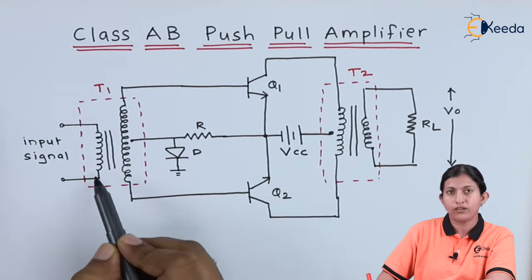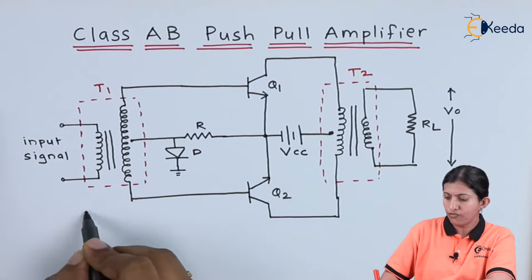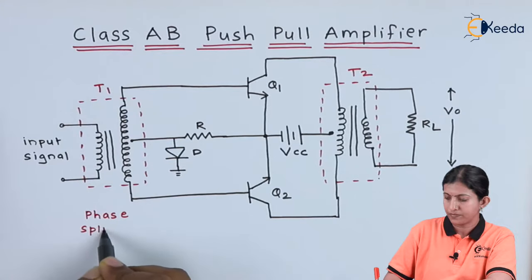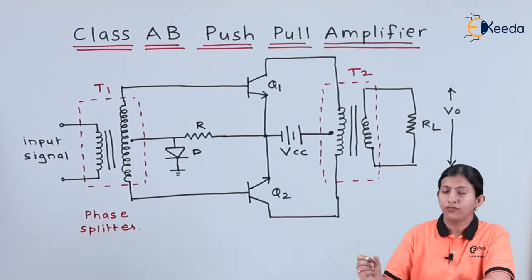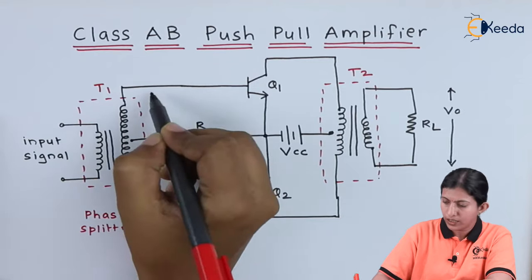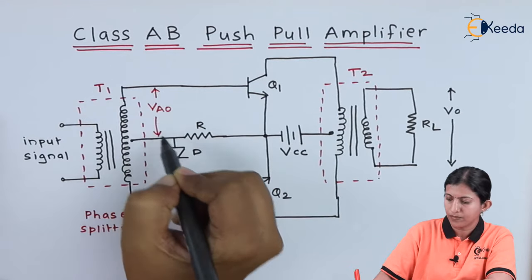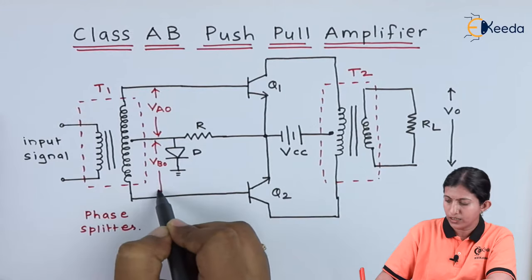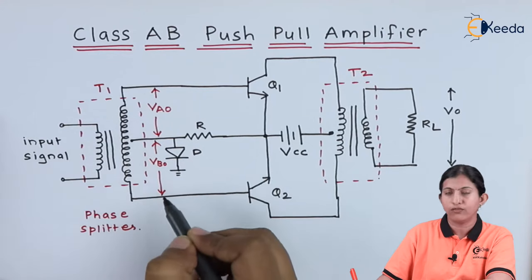The transformer connected at the input side is called a phase splitter, which splits the voltage at two points. So here the voltage VAO and VBO, which is the supply voltage, are 180 degrees phase shifted with each other.